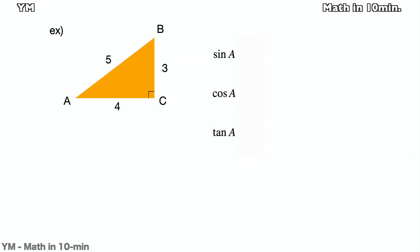Let's look at the example as a warm-up. The triangle ABC is a right triangle. Its hypotenuse has a length 5 and the other sides have length 3 and 4. Then we have to find sine A, cosine A, and tangent A.